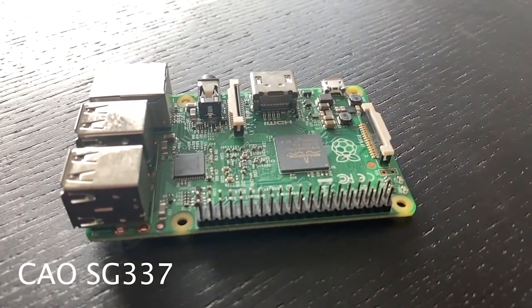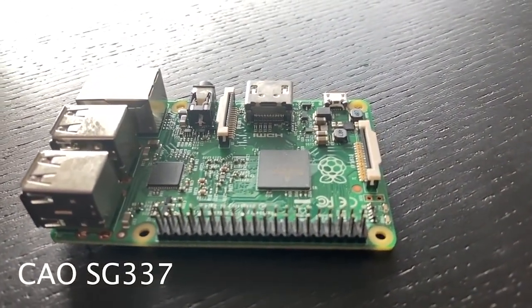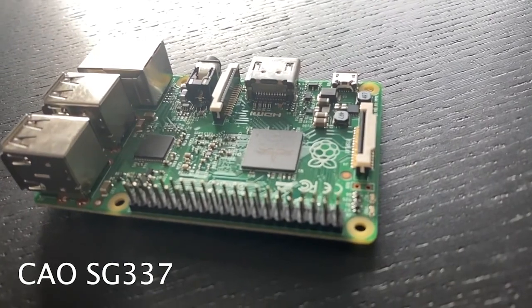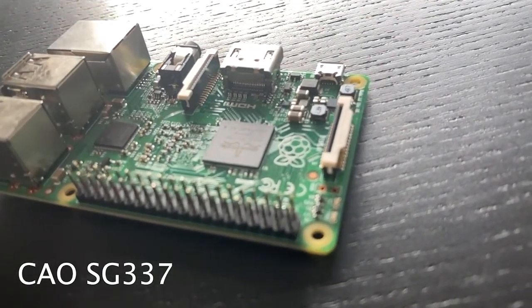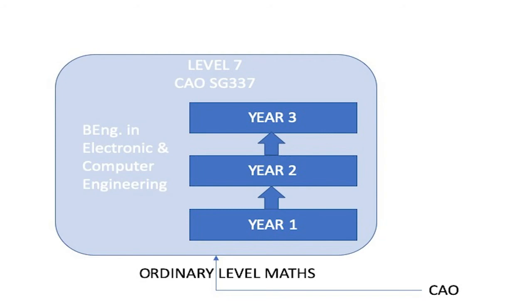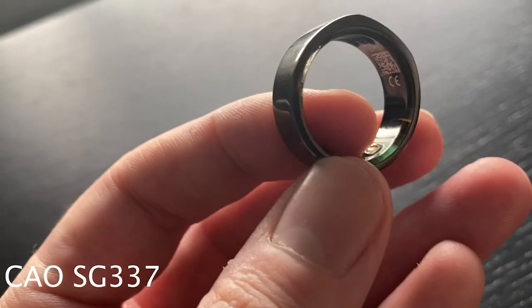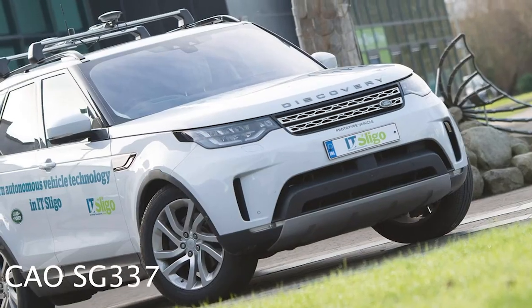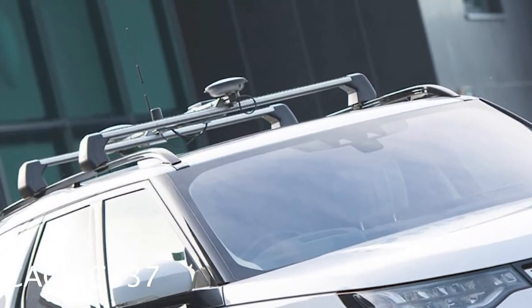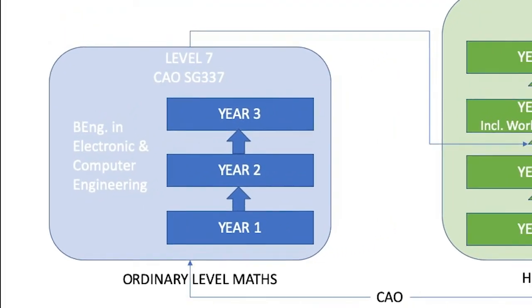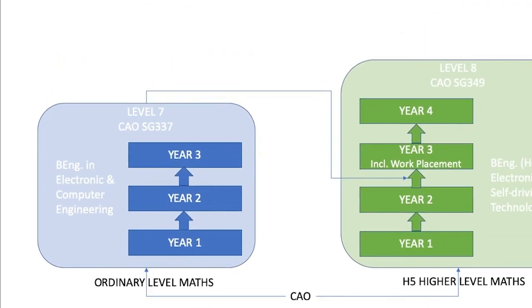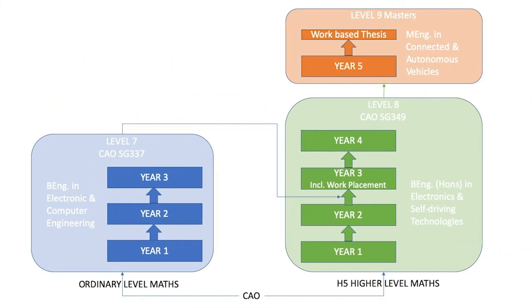If you are interested in technology or engineering but are not doing higher level maths, why not consider our level seven in electronic and computer engineering? This is a three-year program that looks at the design and development of embedded electronic systems. These are the medical devices that keep us healthy, the consumer devices that keep us entertained, or the controlled systems that keep us safe on the road. You can then progress onto the level eight electronics and self-driving technologies and from there to the masters.